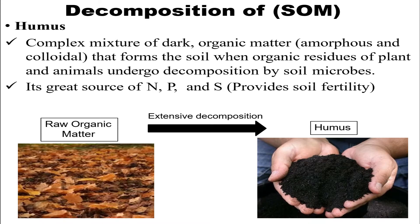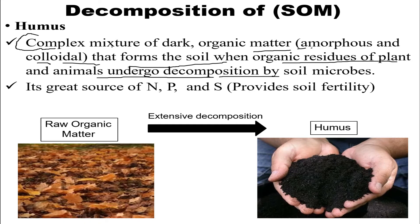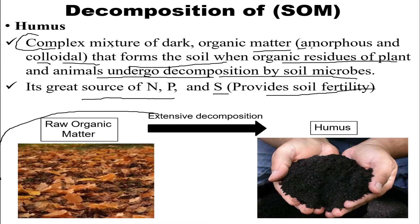Let's talk about humus, which is the most important component that gets formed after decomposition. Humus is basically a complex mixture of dark organic matter which is amorphous and colloidal in nature, that forms in soil when organic residues of plant and animal undergo decomposition by soil microbes. It is also a great source of nitrogen, phosphorus, and sulfur, which provides soil fertility.